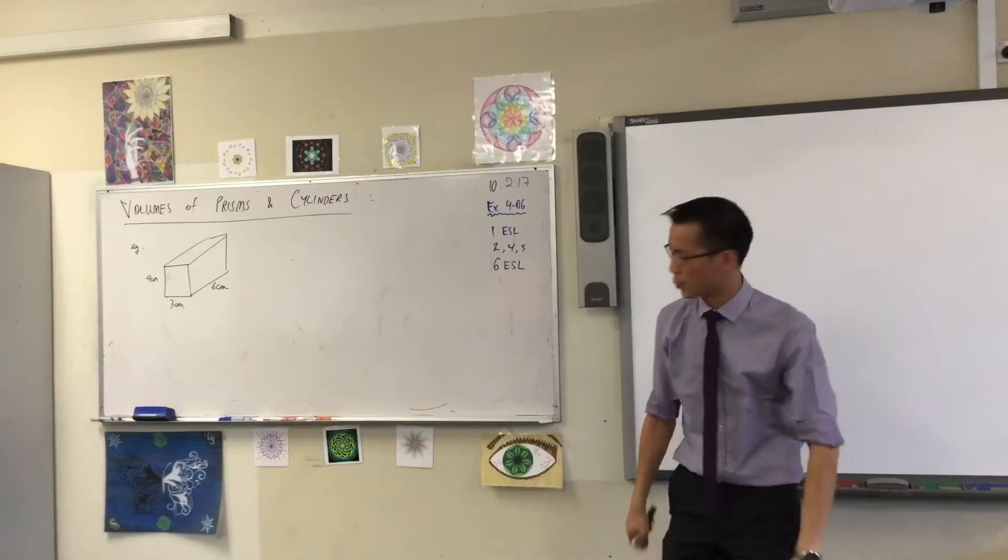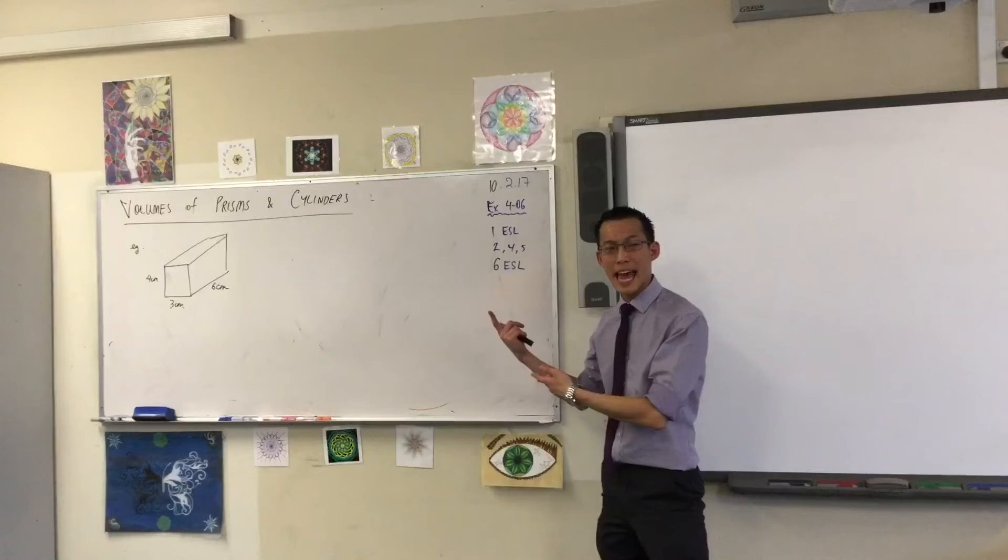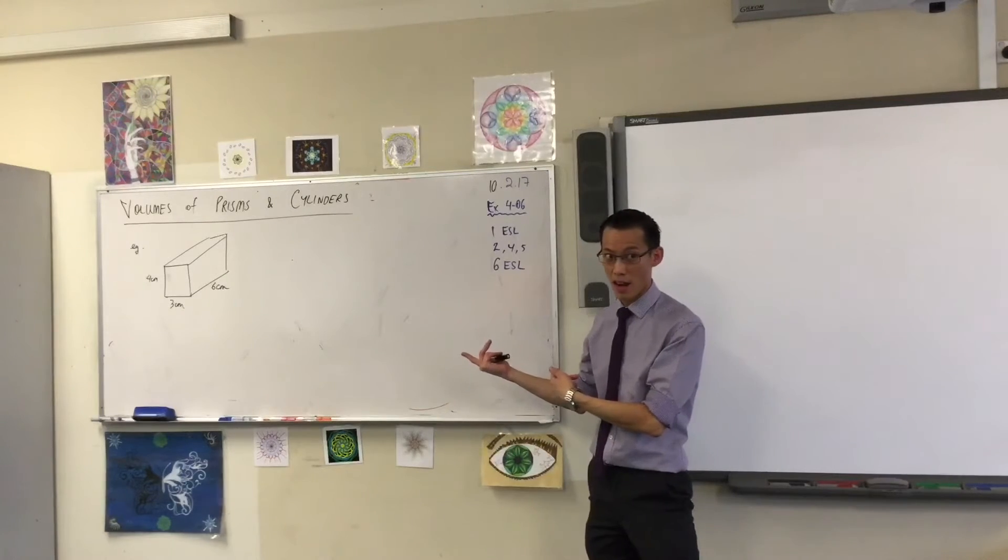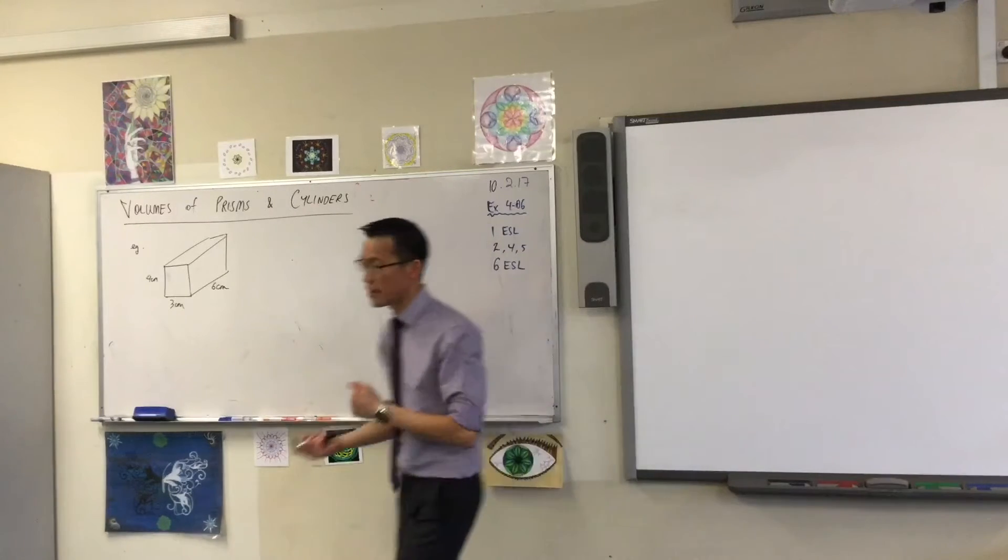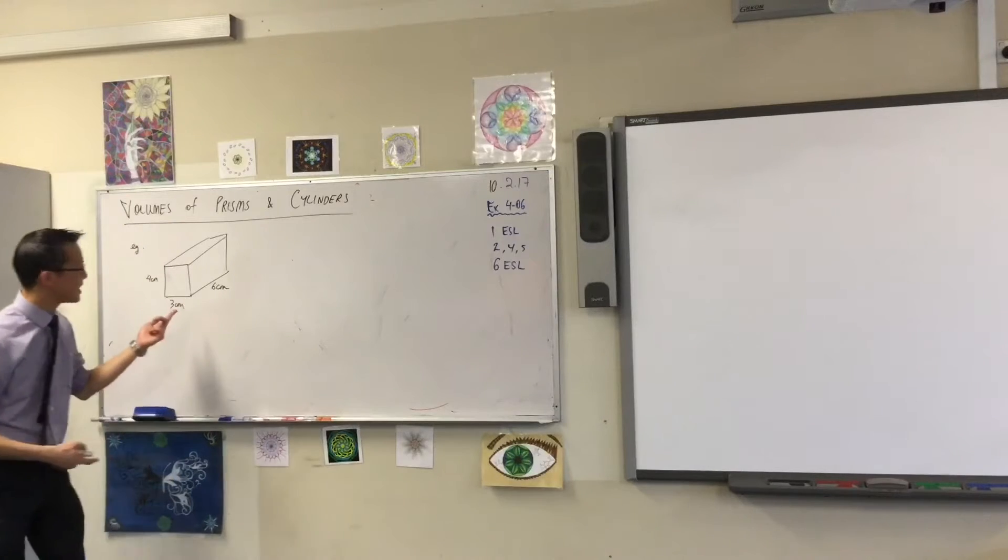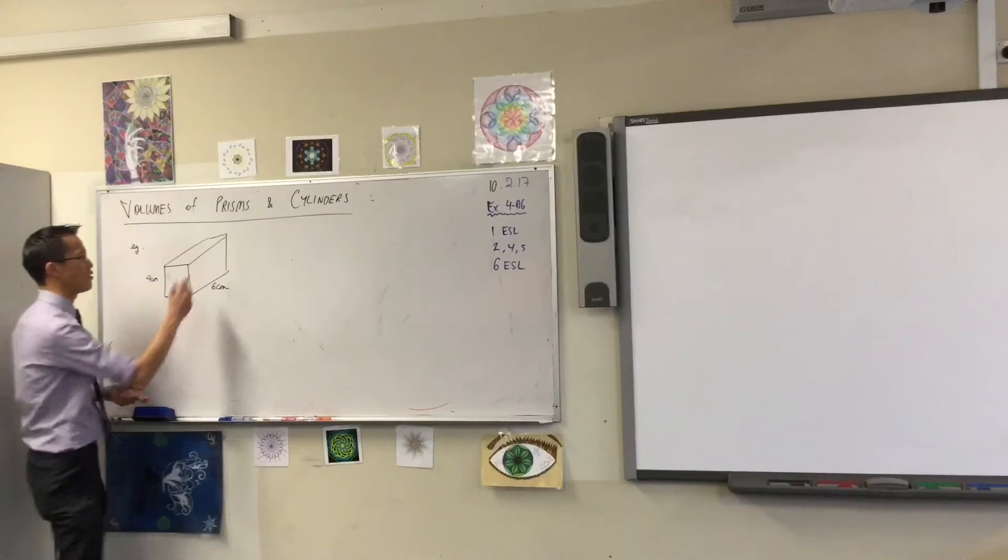So here's an example. This is about as simple as it can get. This is a - what is the name of the shape again? A rectangular prism, thank you very much. And you can see I haven't drawn in the edges that are hidden yet, so let's do that now.